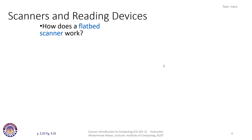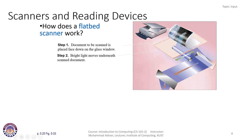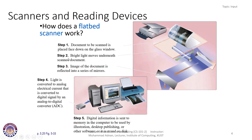For simplicity, we are going to discuss how a flatbed scanner works. We place a document inside it, it scans the document, and the document is converted into digital form for further processing. In step one, a document to be scanned is placed face down on the glass window. In step two, a bright light moves underneath the scanned document, reflected upon the surface of the document.